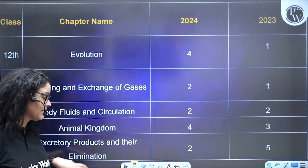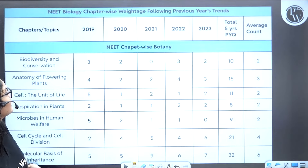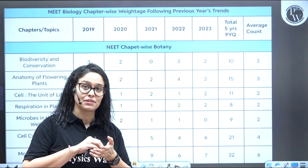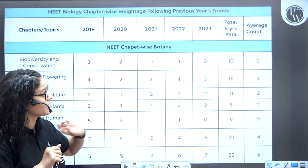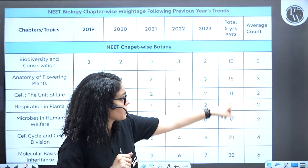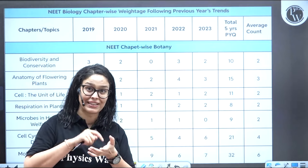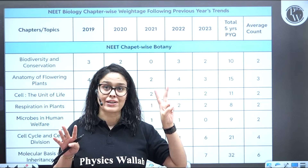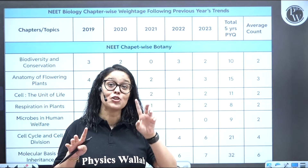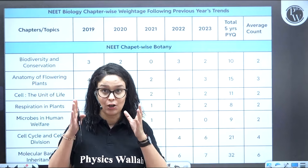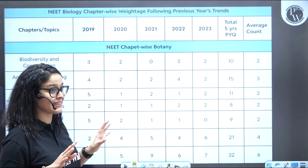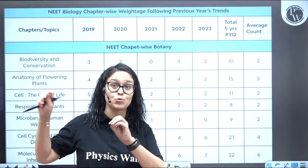Chemical coordination and integration — on average two questions. Locomotion and movement — on average two to three questions. Evolution — four and one, so the weightage of this chapter is also increasing this year. Breathing and exchange of gases — body fluid and circulation two questions on average. Animal kingdom — good weightage, three to four questions. Excretory products and their elimination — two to five questions. Now we will analyze NEET biology chapter-wise weightage from previous year trends, from 2019 to 2023.